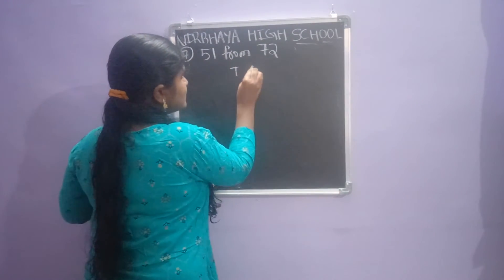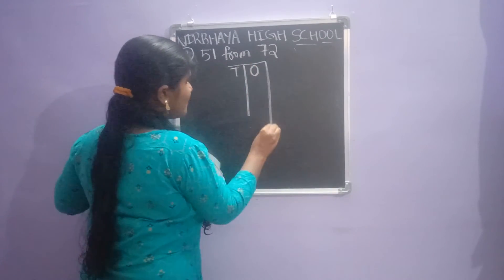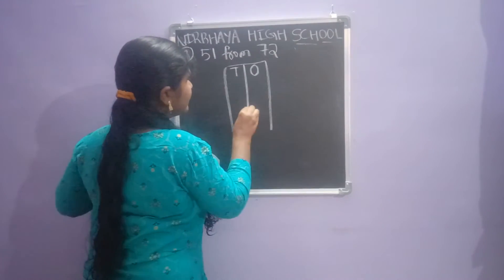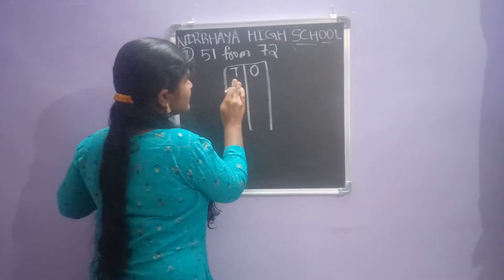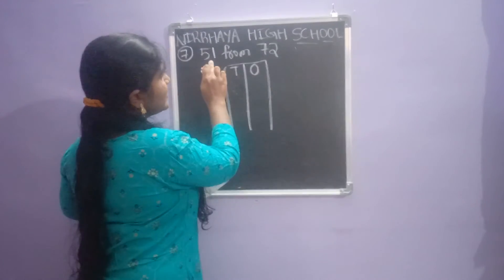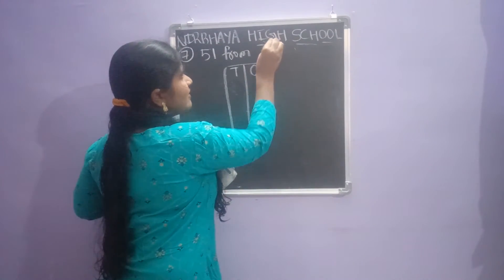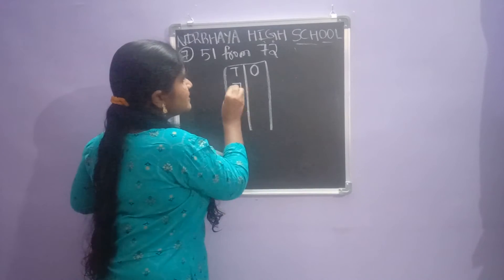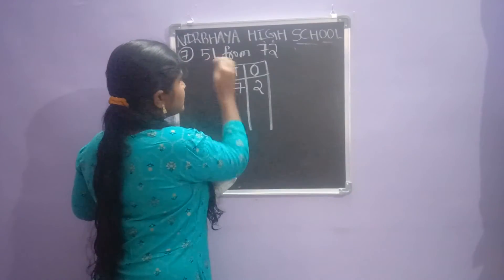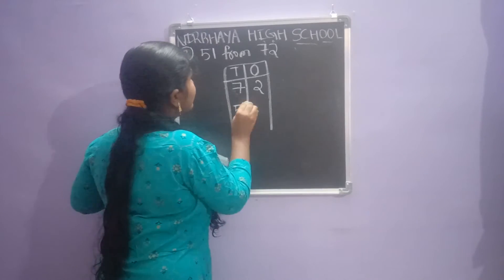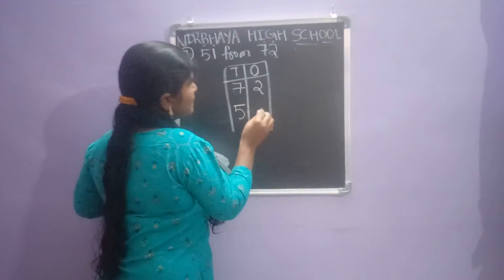We are writing first tens and ones. After that, what is the bigger number — 51 or 72? Seventy-two. So in the tens place: 7, and in the ones place: 2. Next, the small number 51 — five in the tens place, one in the ones place.